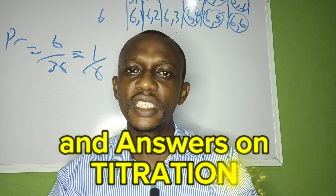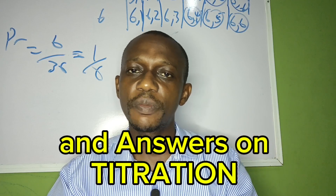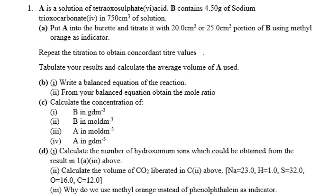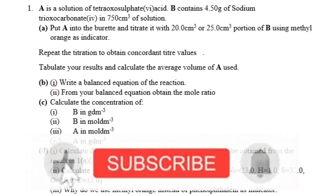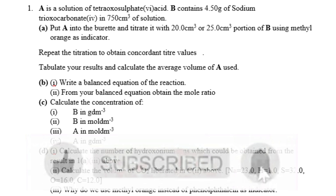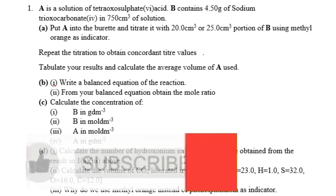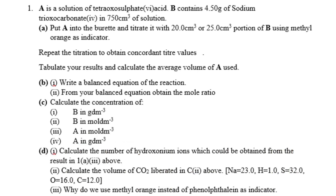The likely question that will be coming out for this NECO Chemistry Practical for this year — so, under titration: A is a solution of trioxosulphate(VI) acid. B contains 4.50 g of sodium trioxocarbonate in 750 cm³ of solution. The question goes forth. Put A into the burette and titrate it with 20.0 cm³ or 25.0 cm³ portion of B using methyl orange as indicator.